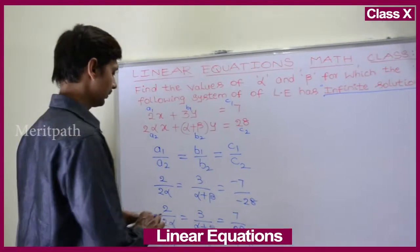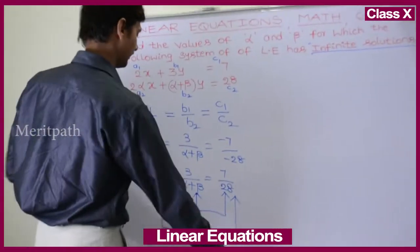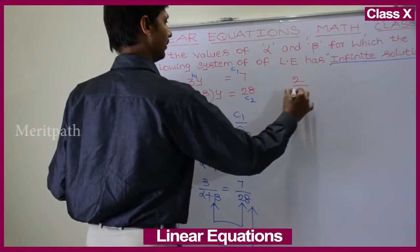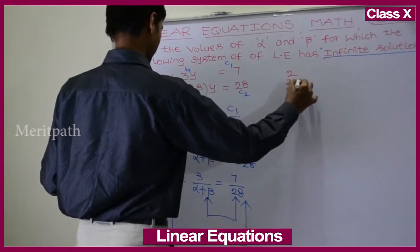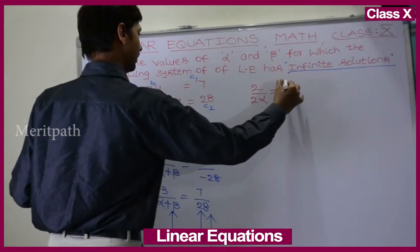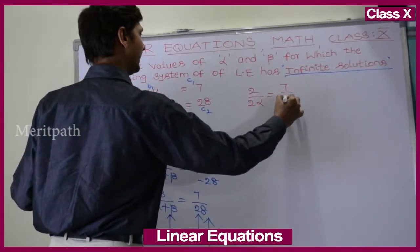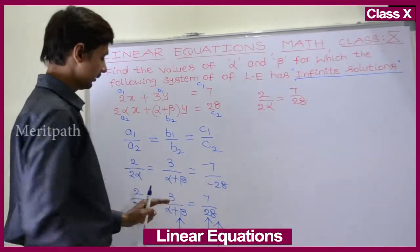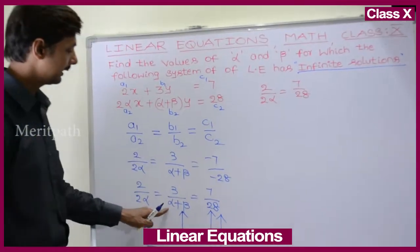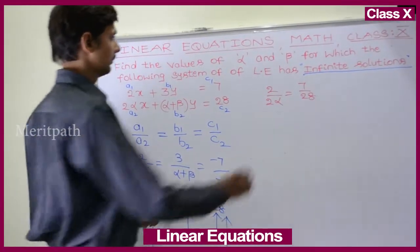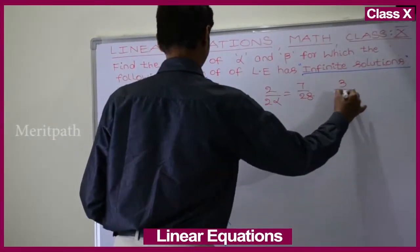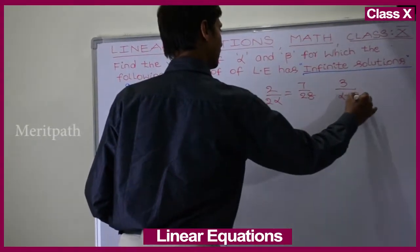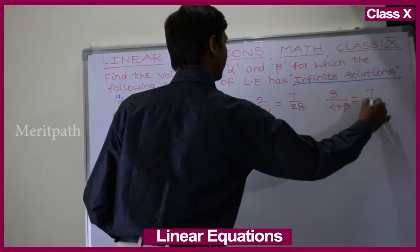Taking the first term equal to the last constant term, we get: 2 by 2 alpha equals 7 by 28. And for the second term equal to the constant term, we get: 3 by alpha plus beta equals 7 by 28.